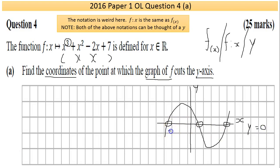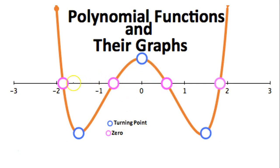It looks like it crosses at a negative x value, and two positive x values. You'll notice it has a max point and a minimum point. What we're asking is where does the curve cut the y-axis — that point will be zero and some y value we've yet to find. Along the y-axis the value of x is always zero.